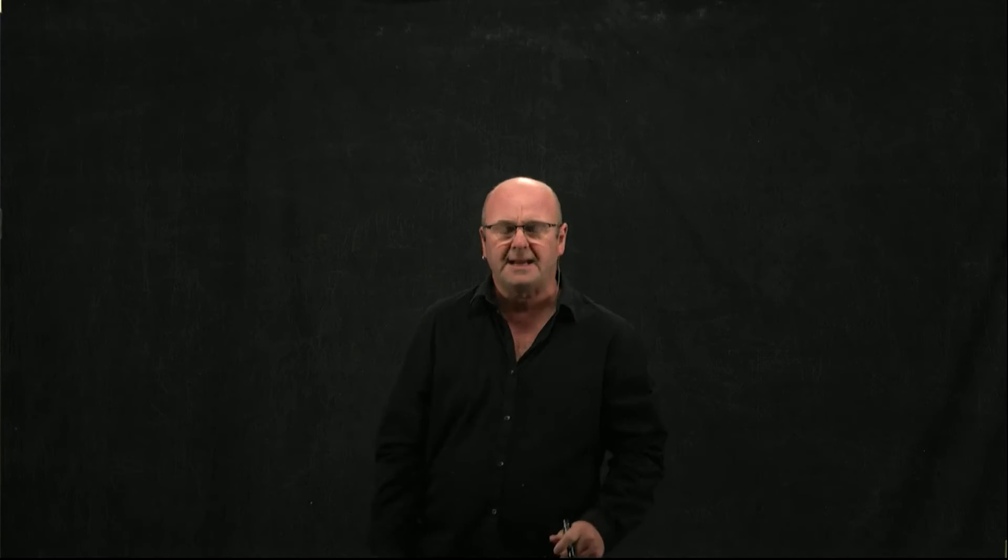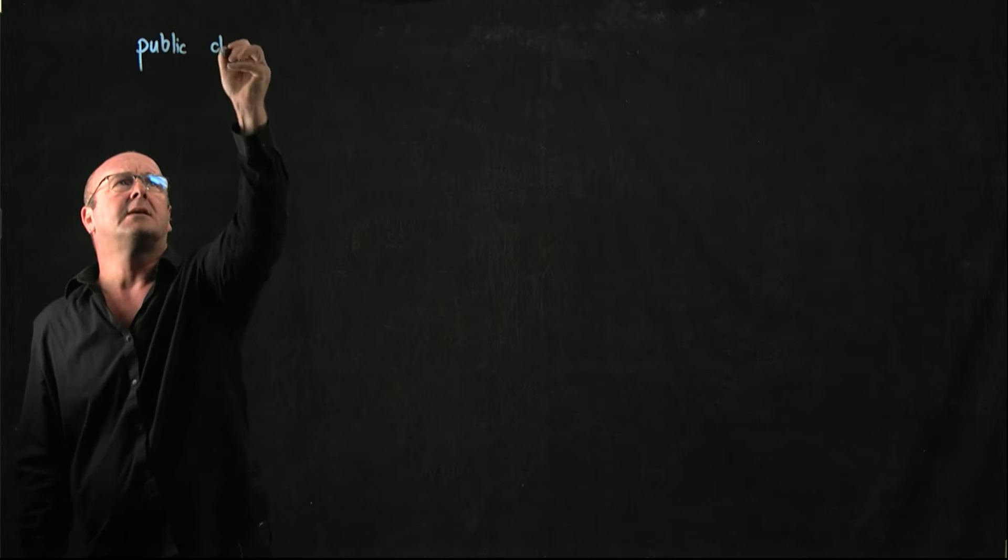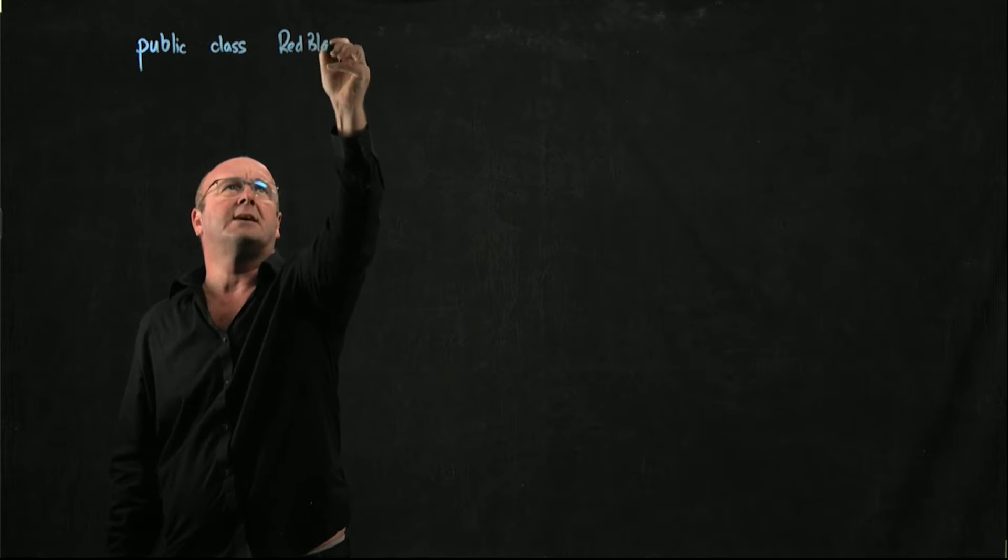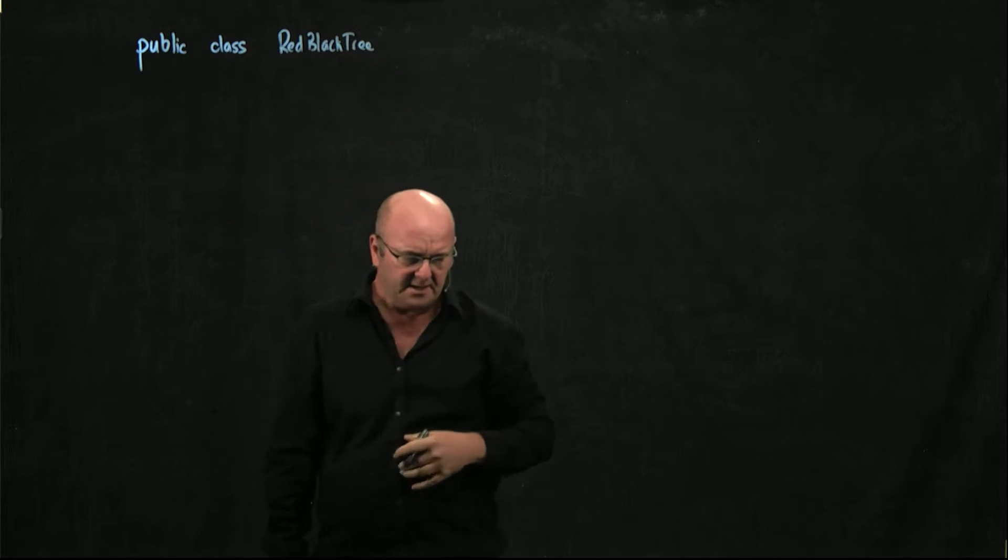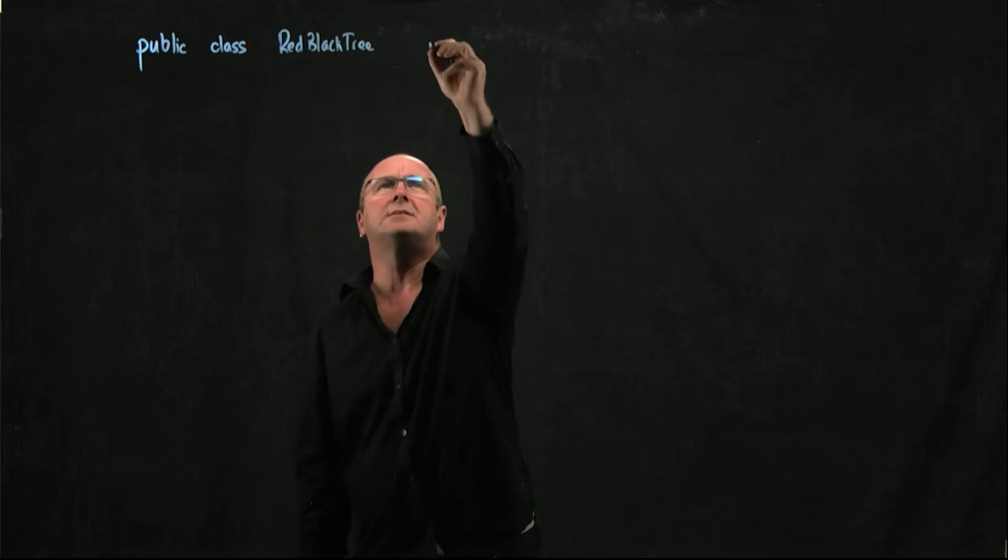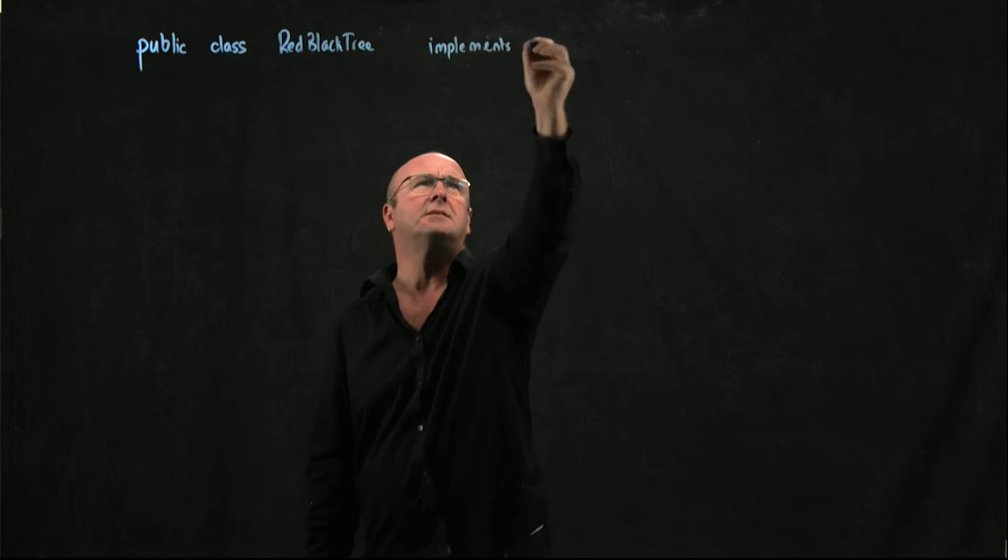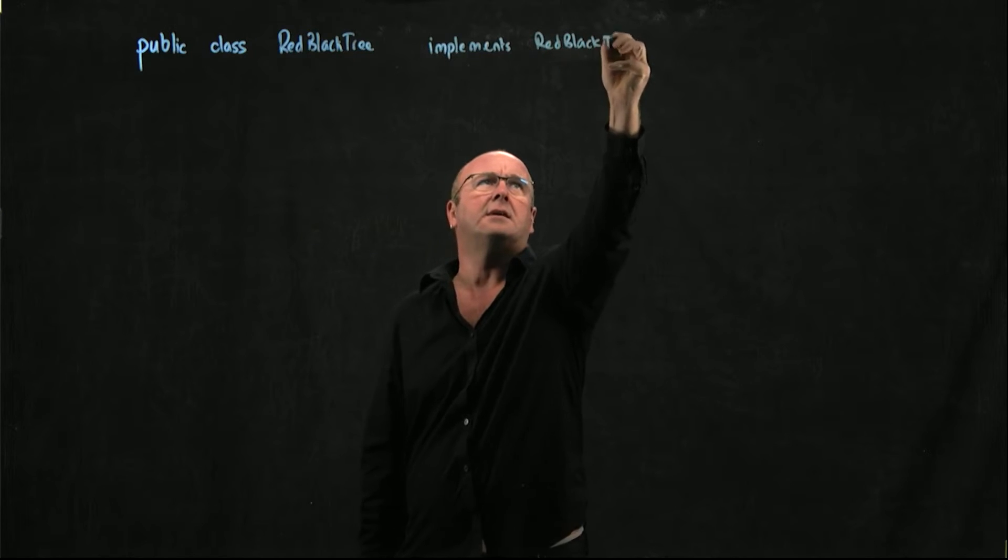So let's take a look at our red-black tree class. We're going to have a public class red-black tree, and our red-black tree is going to implement the interface red-black i.